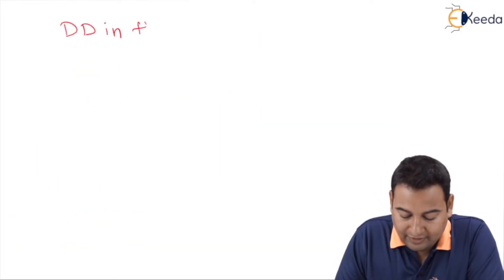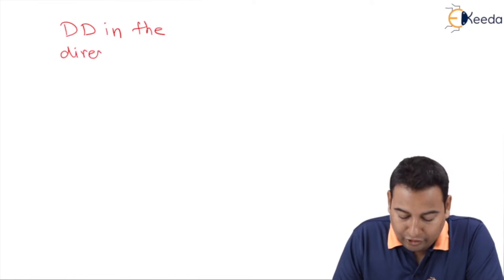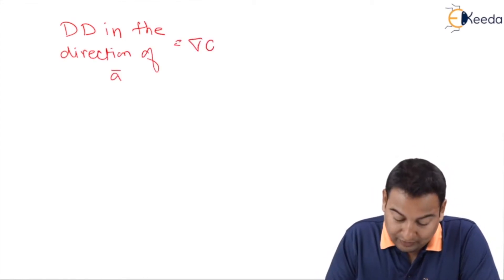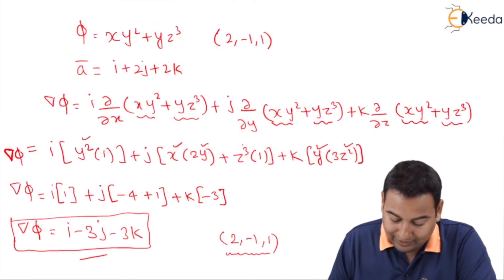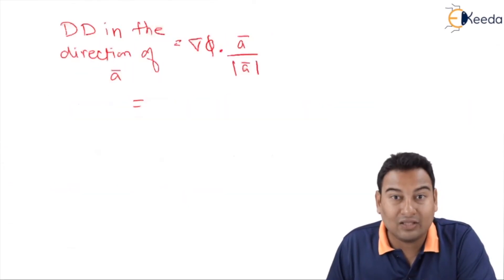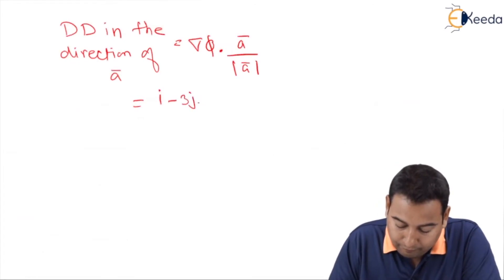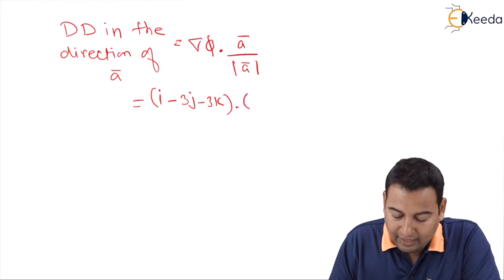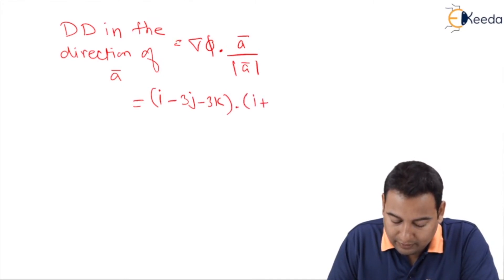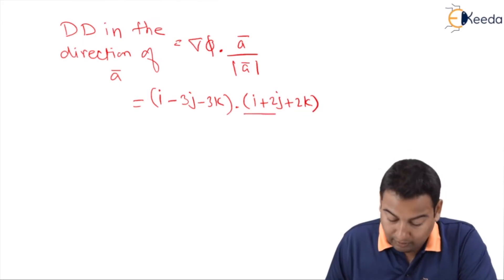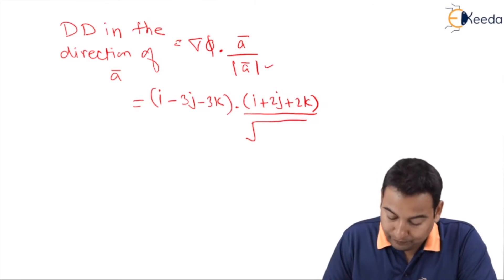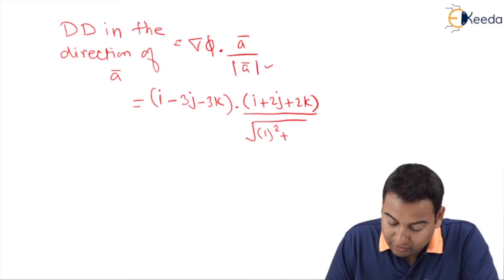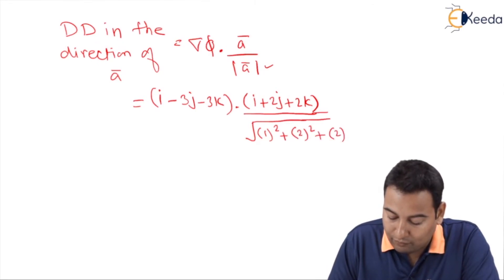Now let's find the directional derivative D. The formula is del-phi dot a-bar upon mod of a-bar. Del-phi is i − 3j − 3k, and a-bar is i + 2j + 2k as provided in the problem. The magnitude of a-bar is √(1² + 2² + 2²).